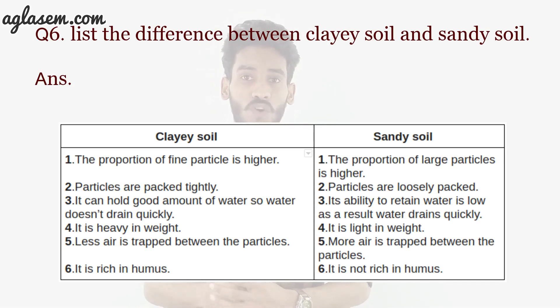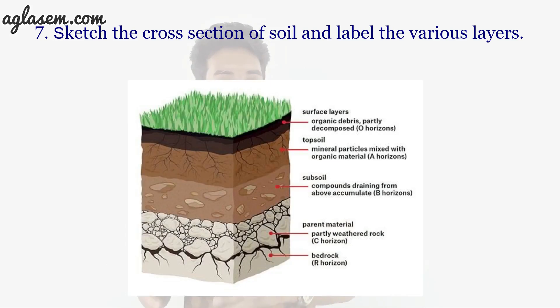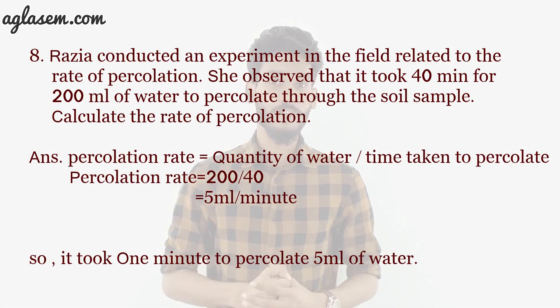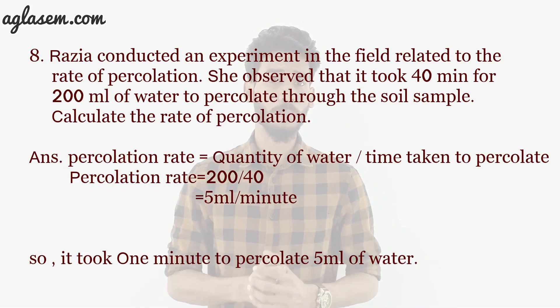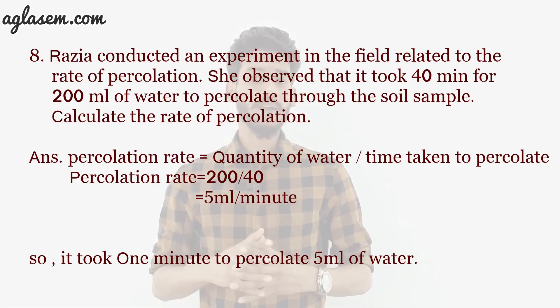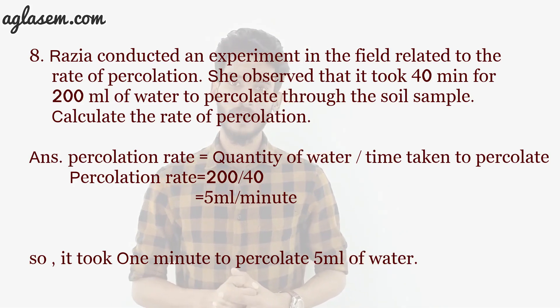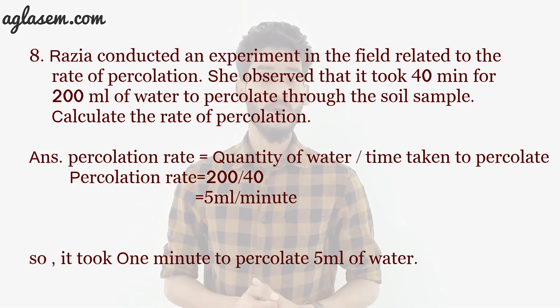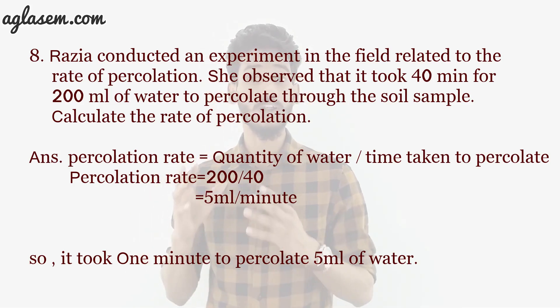Clay soils are rich in humus whereas sandy soils are not. Question 7 asks to sketch the cross section of soil and label the various layers — the diagram can be seen on screen. Question 8: Rajya conducted an experiment where it took 40 minutes for 200 ml of water to percolate through a soil sample. Percolation rate = quantity of water ÷ time taken = 200 ÷ 40 = 5 ml per minute.